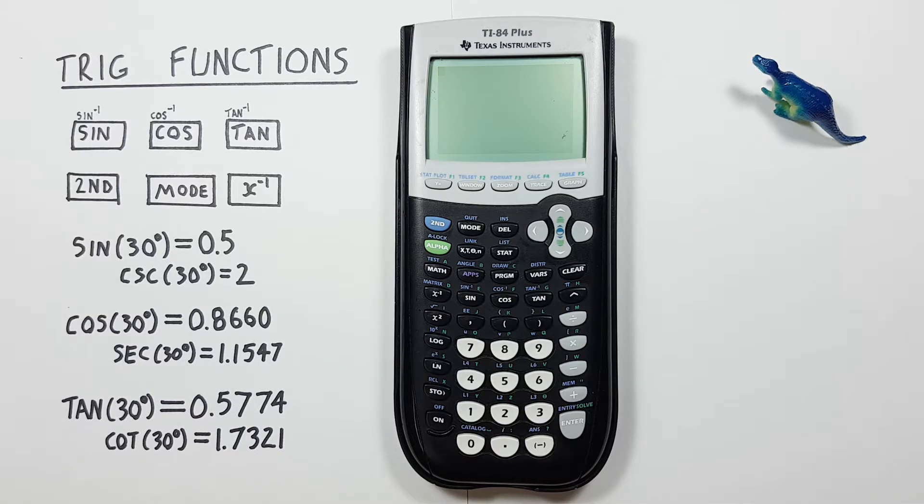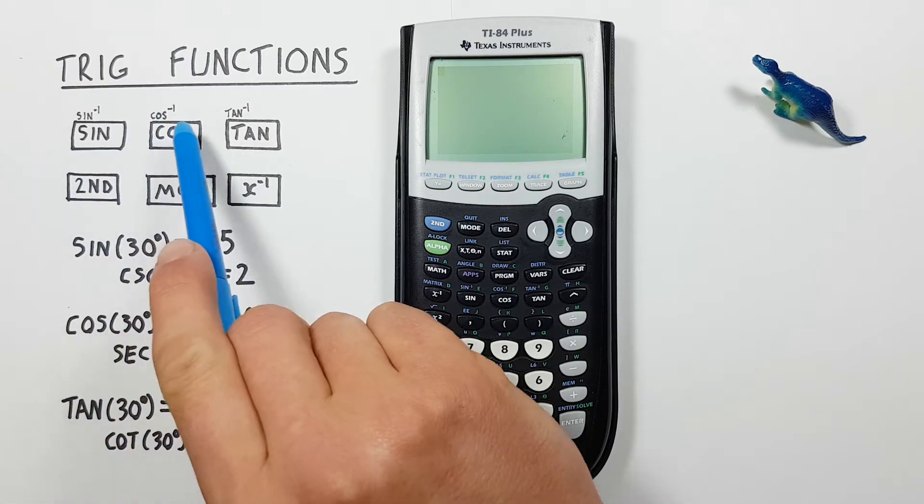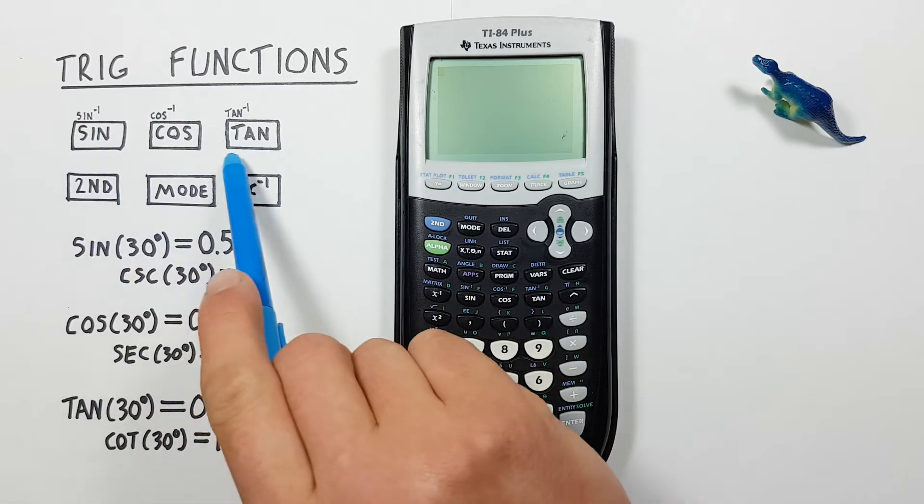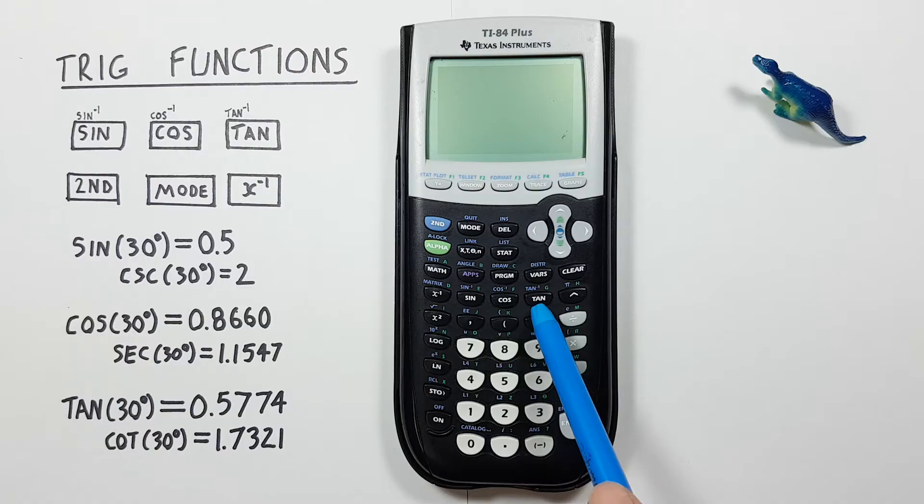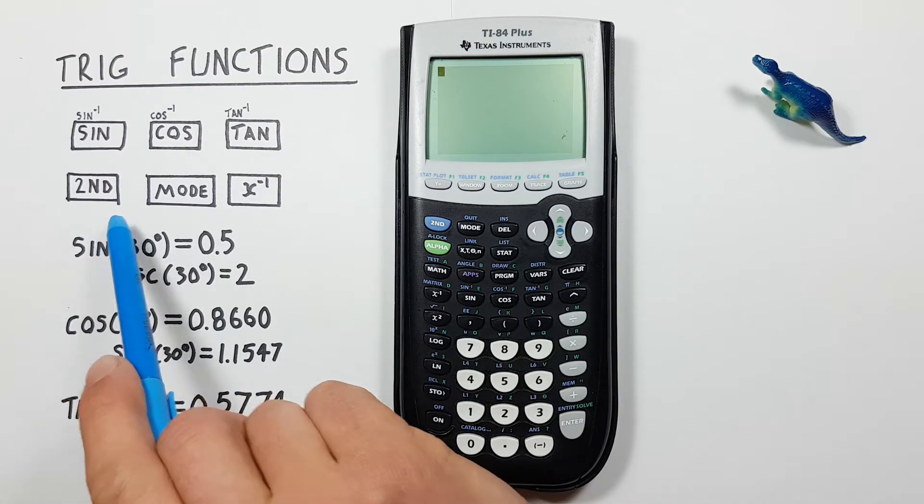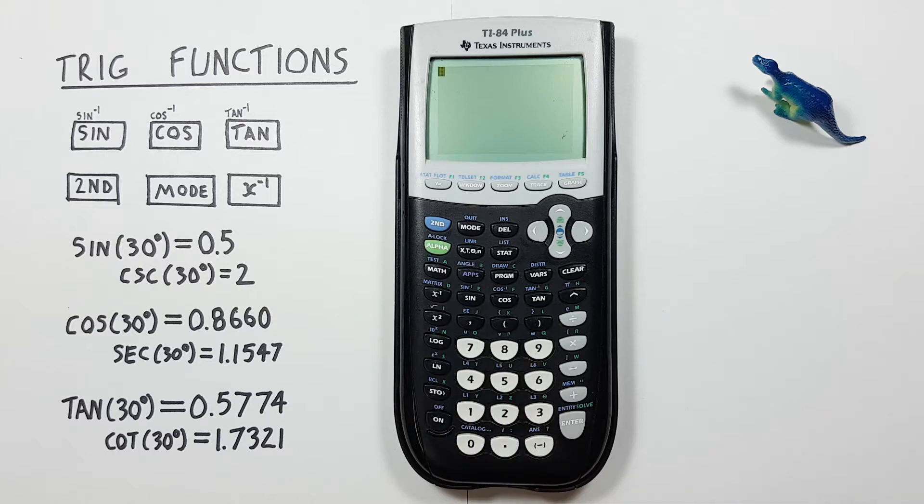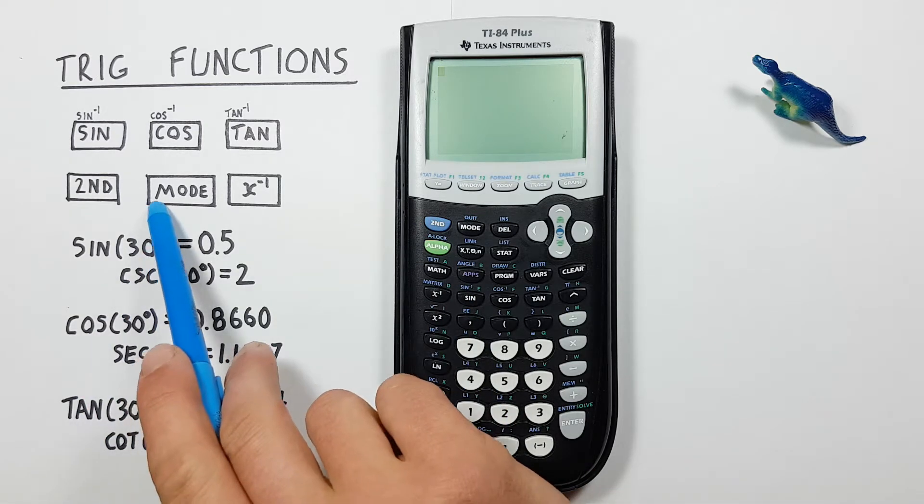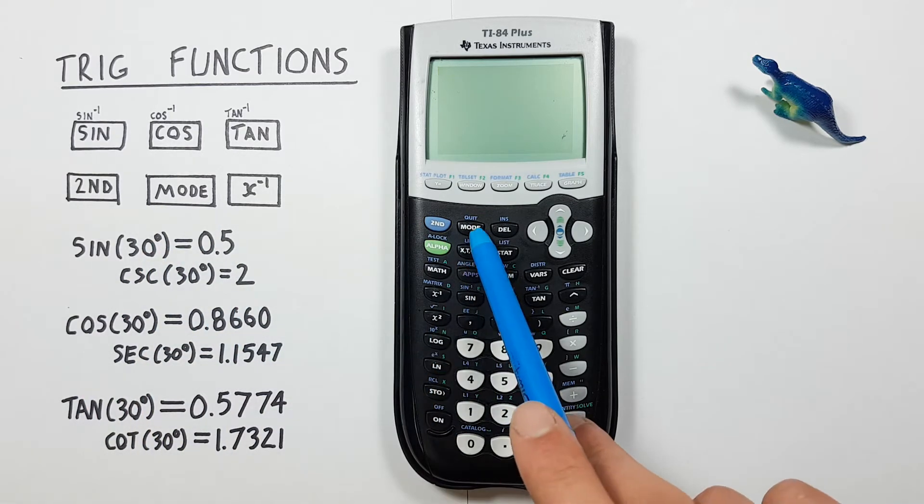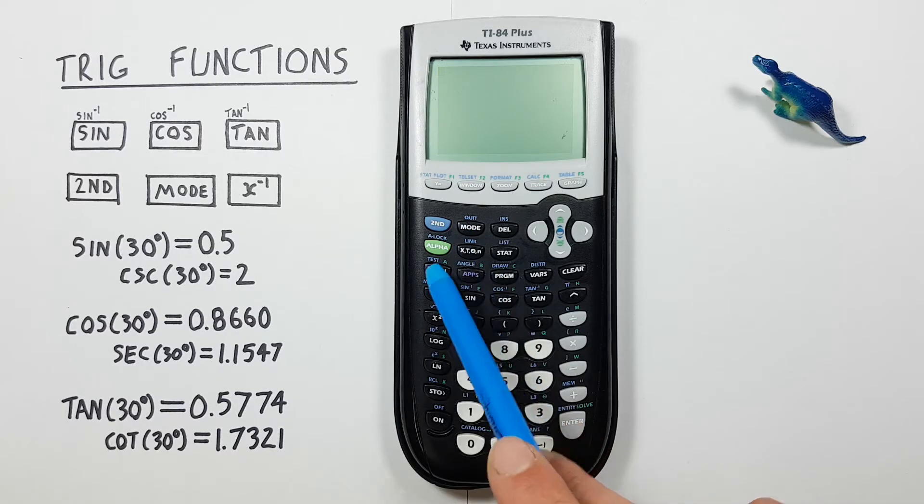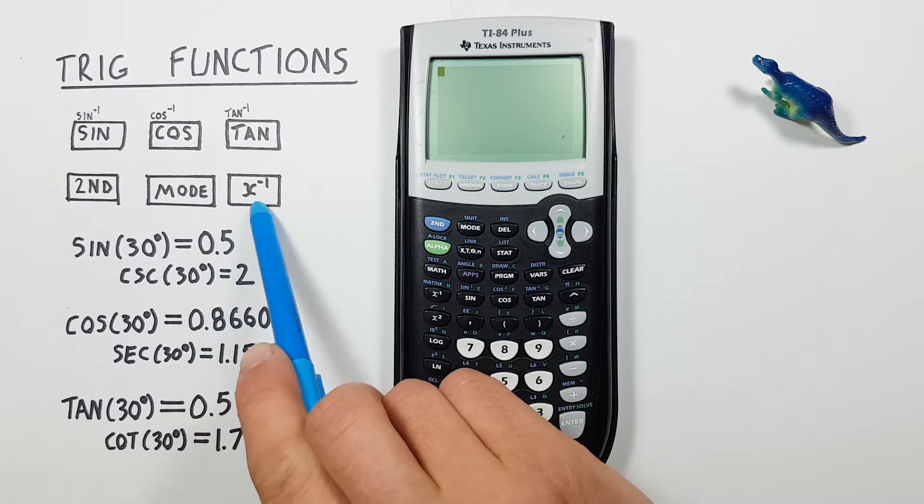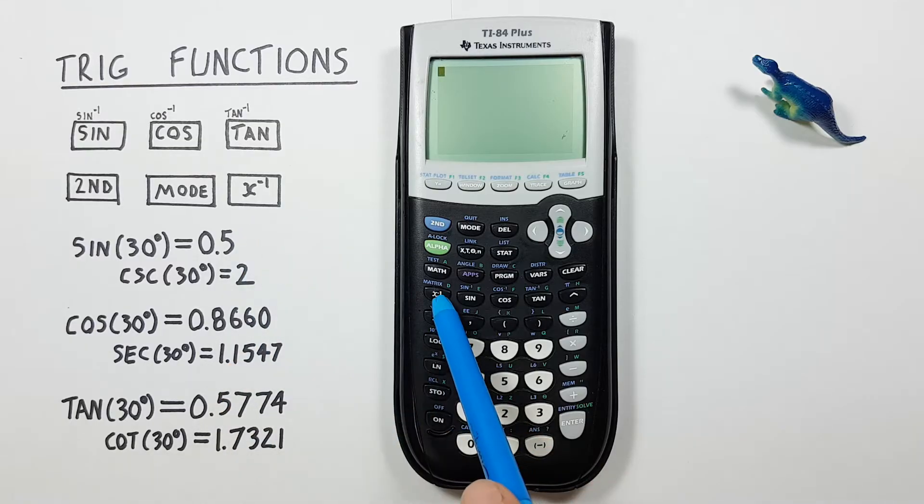To do this we'll be using the sine, cosine, and tan keys located along here, as well as the second function key located here, the mode key located here beside the second function key, and the inverse key located here.